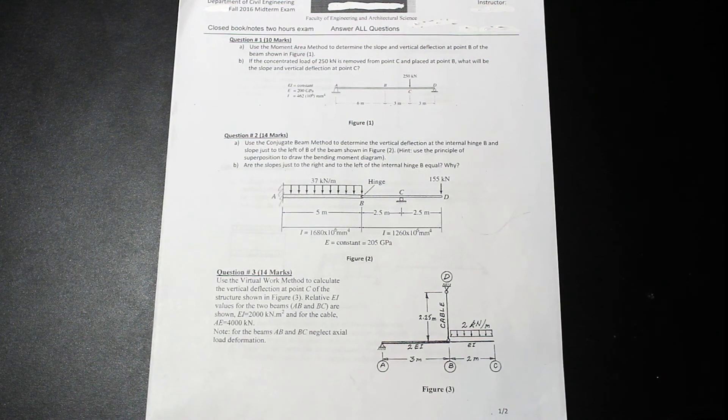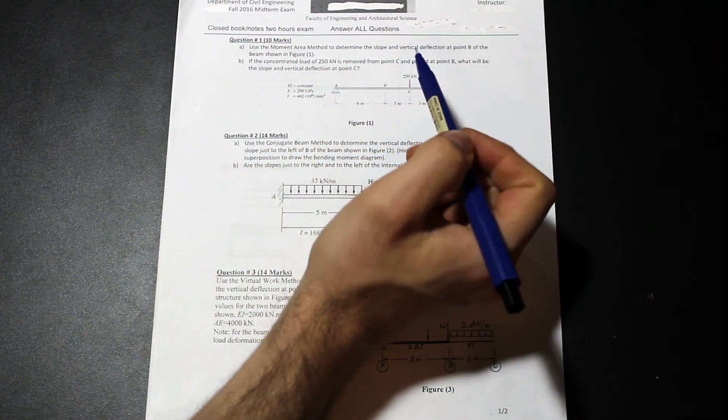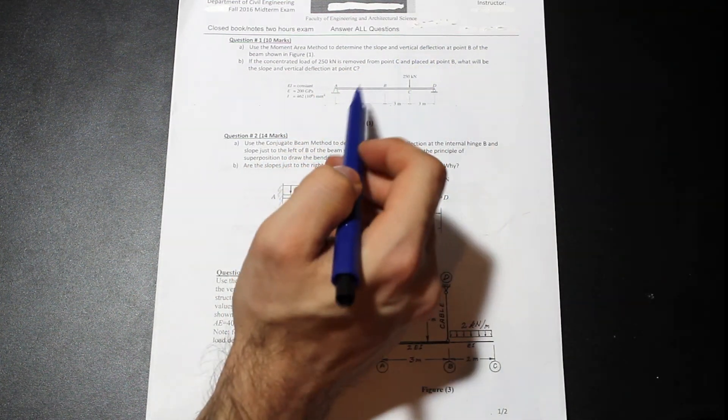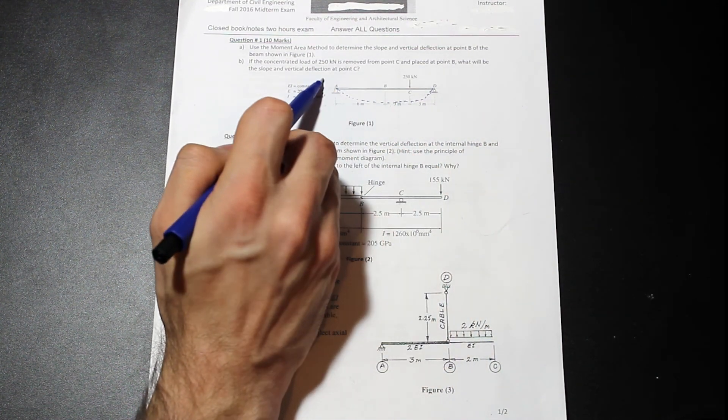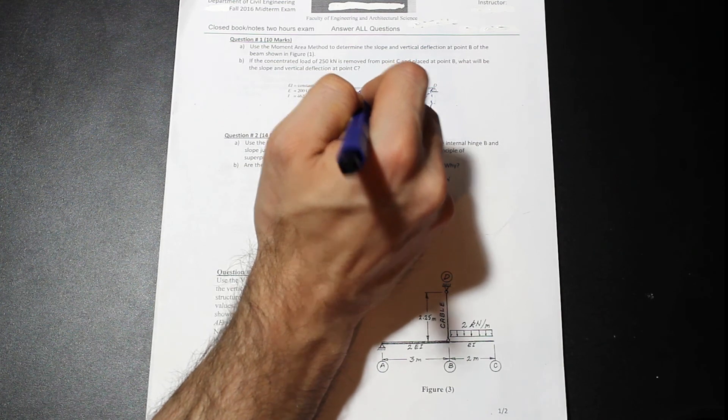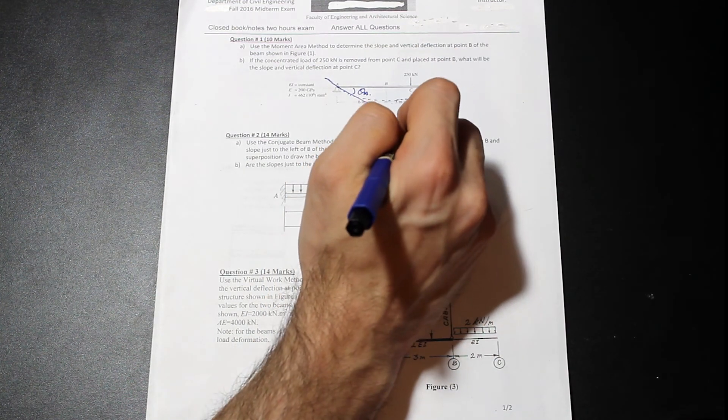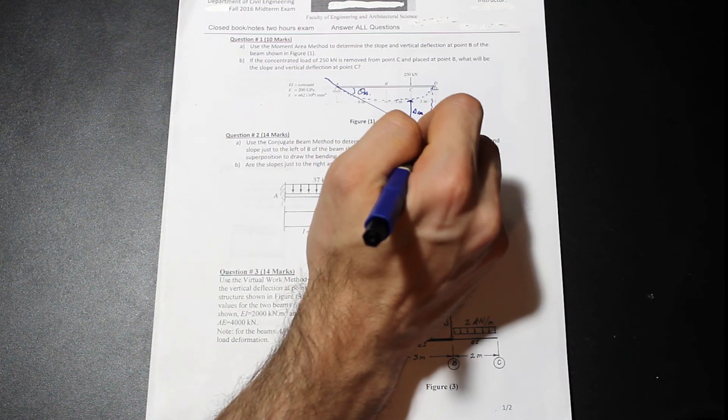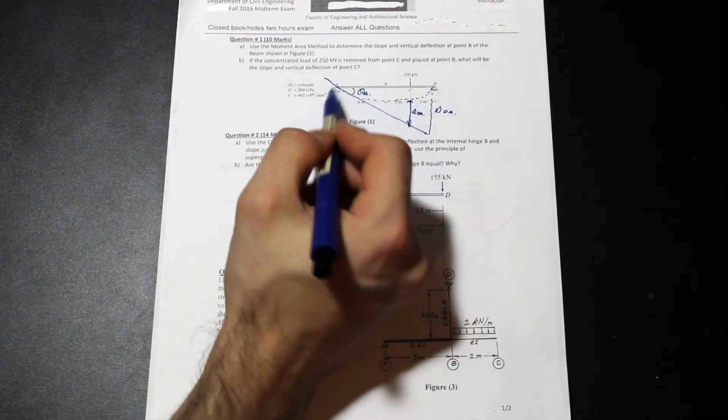First question asks us to use the moment area method to determine the slope and vertical deflection at point B of the beam. So that's pretty easy. And actually this question is fairly simple because when you have a simply supported beam and just one point load, we know that the elastic curve is going to be kind of continuous throughout the whole thing. And what we do with the moment area method is we kind of draw a tangent here and the tangent, we're going to call that theta A. And the tangent is to the elastic curve and the distance at any point from this tangent to the elastic curve, we're going to call that delta CA.